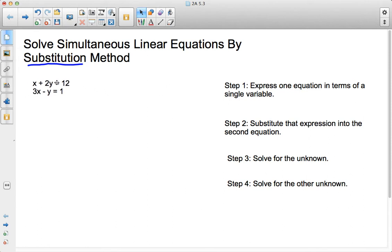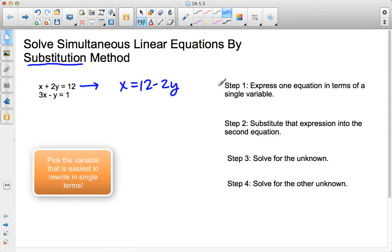For example, with my simultaneous linear equations here, x plus 2y equals 12, and 3x minus y equals 1, what I'm going to do is take the first equation, x plus 2y equals 12, and I'm going to change it so that I get x equals 12 minus 2y. So that's step one. Express one of the equations in terms of a single variable.